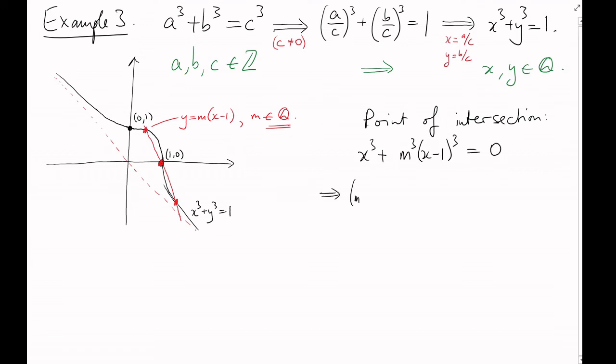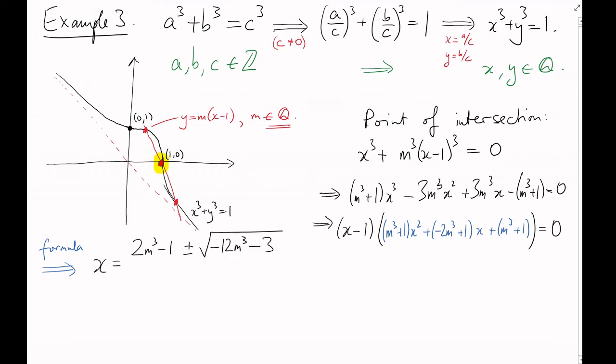We can expand it all out. And because x equals 1 gives one of the intersection points, we expect a factor of x minus 1, which we can factorize out. That gives us this quadratic equation in x, which we can solve using the formula. The solutions are as follows.